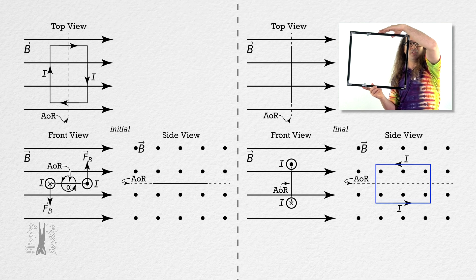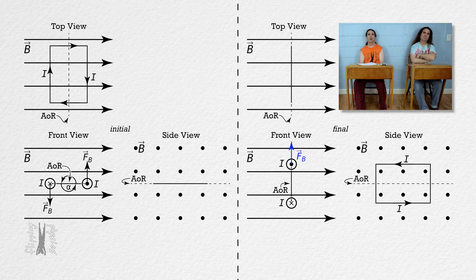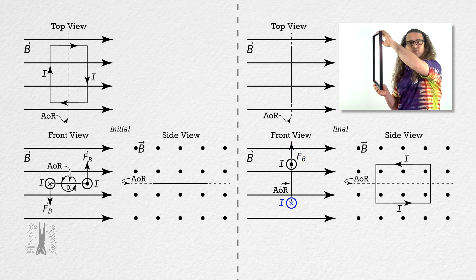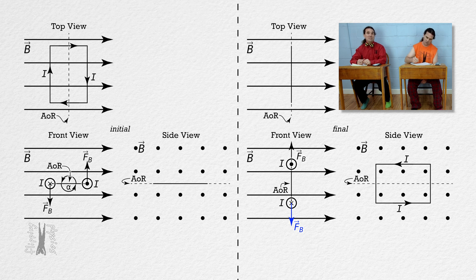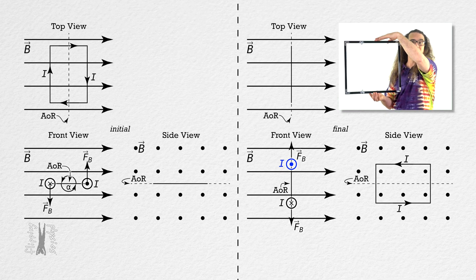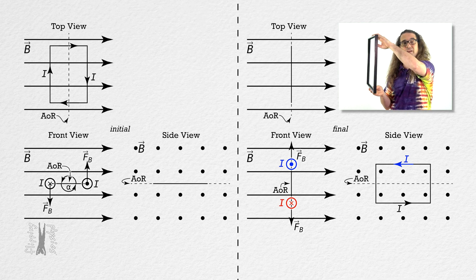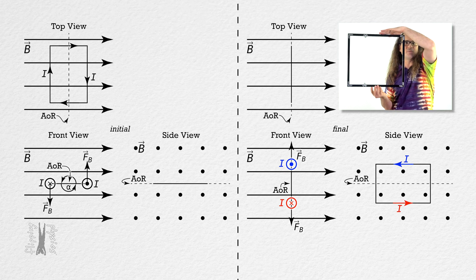At this final point in the front view, the current in the top wire is still out of the screen, causing an induced magnetic force which is still upward. The current in the bottom wire in the front view is still into the screen, causing an induced magnetic force which is still downward. That means there is zero net torque caused by the induced magnetic forces on the loop at the final position. Notice that the current which is out of the screen in the top wire in the front view is to the left in the top wire in the side view, and the current which is into the screen in the bottom wire in the front view is to the right in the bottom wire in the side view. That means the current in the wire loop in the final position in the side view is counterclockwise.